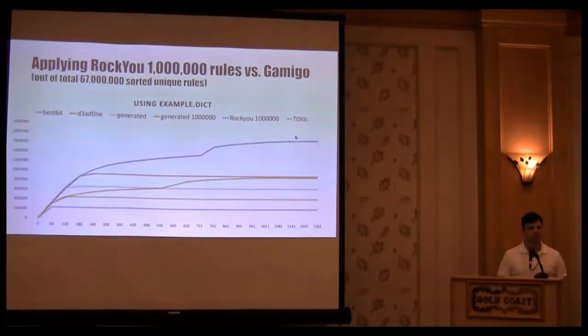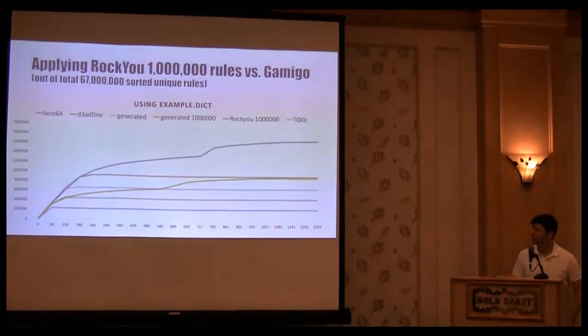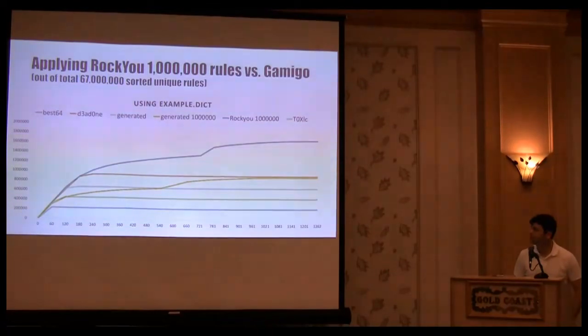Alright, but, as a side effect, while I was doing all of this, I did generate, for RockYou at least, I generated 67 million unique rules. And I sorted them based on their occurrence. I'm not going to run all of them. I took the top 1 million, and basically put them against the existing rules that are in Hashcat right now.